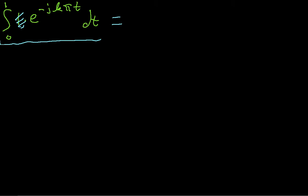To integrate an exponential, I end up with 1 over the term in the exponent, or the constant in the exponent. That should have a negative sign in front of it, times e^(-jkπt), evaluated at 0 and 1.